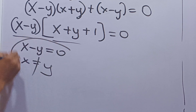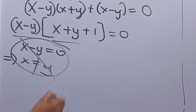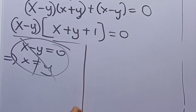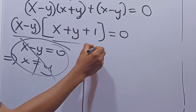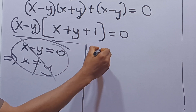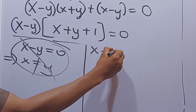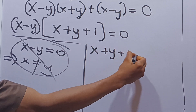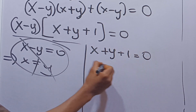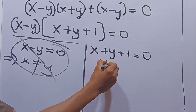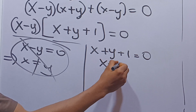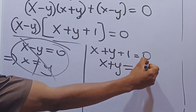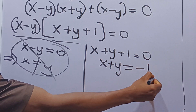So that solution is not possible. The second option is that x plus y plus 1 is equal to 0, implying that x plus y is equal to negative 1.